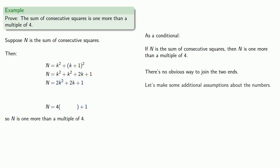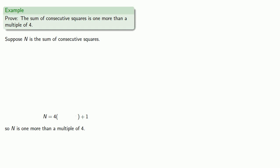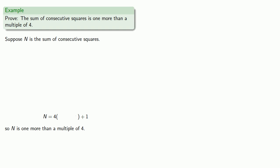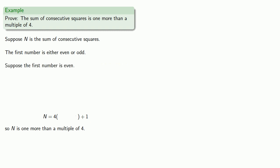So let's make some additional assumptions about the numbers. Suppose n is the sum of consecutive squares, and again we want to conclude that n is one more than a multiple of four — that is, n equals four times something plus one. But this time we say something about the numbers: the first number is either even or odd. Suppose it's even. Then n, as the sum of consecutive squares, looks like the square of an even number plus the square of the number after it — that's (2k)² + (2k+1)².